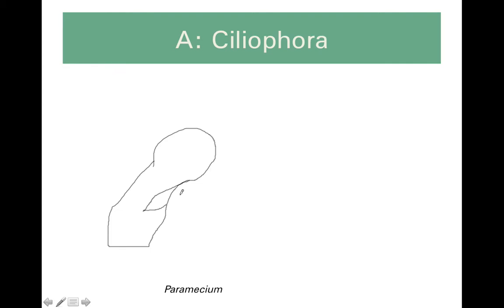This is going to be our cytostome or cell mouth, leading into a cytopharynx or cell throat. Food items are going to follow the oral groove until they get to the end of the cytopharynx, where they form a food vacuole. This food vacuole can be attached to lysosomes or other structures that contain enzymes to help digest the food. Eventually those food vacuoles are going to end up at the cytoproct or cell anus, where they will be released.